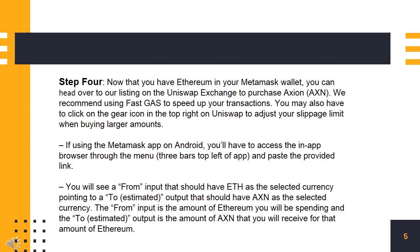Step 4: Now that you have Ethereum in your Metamask wallet, you can head over to our listing on the Uniswap exchange to purchase Axion. We recommend using FastGas to speed up your transactions. You may also have to click on the gear icon in the top right on Uniswap to adjust your slippage limit when buying larger amounts. If using the Metamask app on Android, you'll have to access the in-app browser through the menu and paste the provided link.